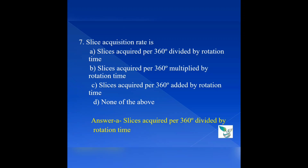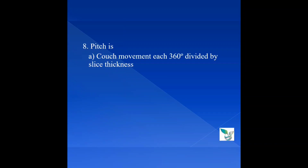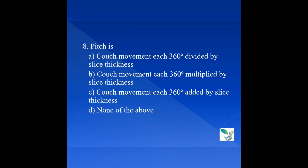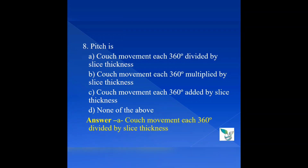Question 8: Pitch is — Option A: Couch movement each 360 degrees divided by slice thickness, Option B: Couch movement each 360 degrees multiplied by slice thickness, Option C: Couch movement each 360 degrees added by slice thickness, Option D: None of the above. The answer is Option A. As the X-ray tube and detector rotate 360 degrees, the table or couch also moves; that movement divided by slice thickness gives the pitch. For example in CT brain, we usually give 5mm slice thickness, and the couch movement is also 5mm.